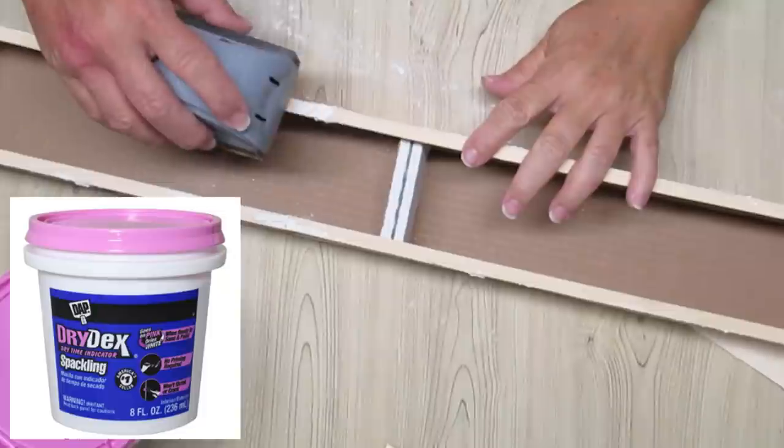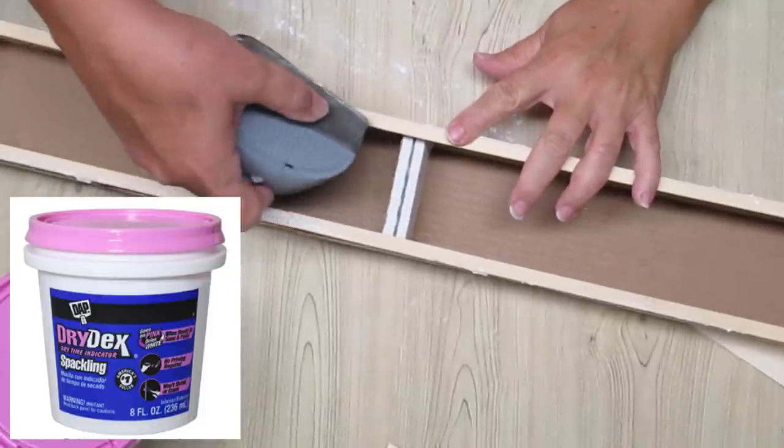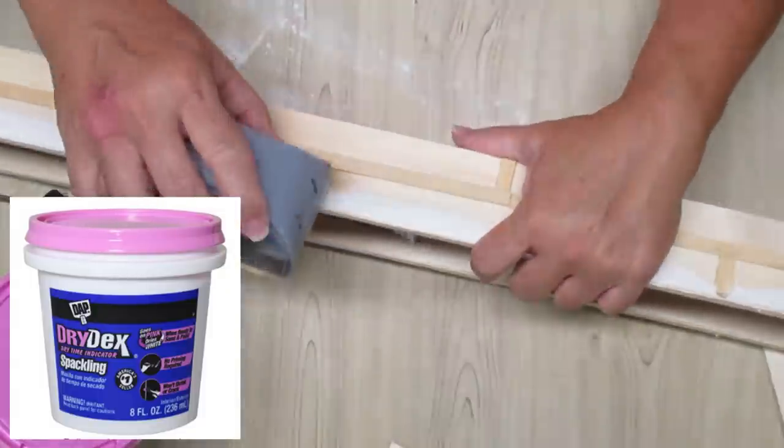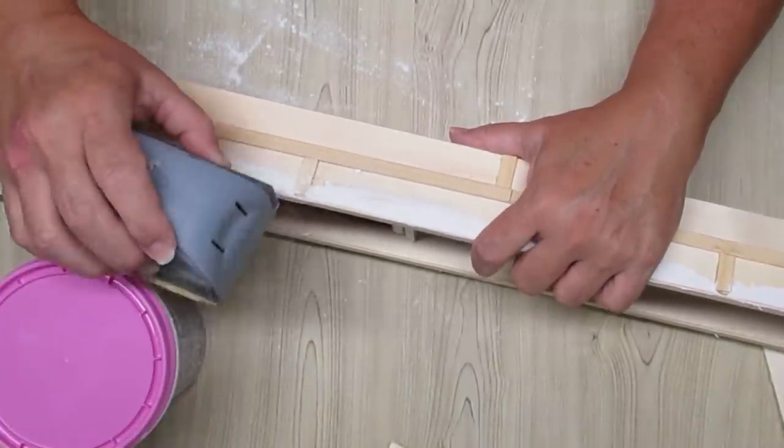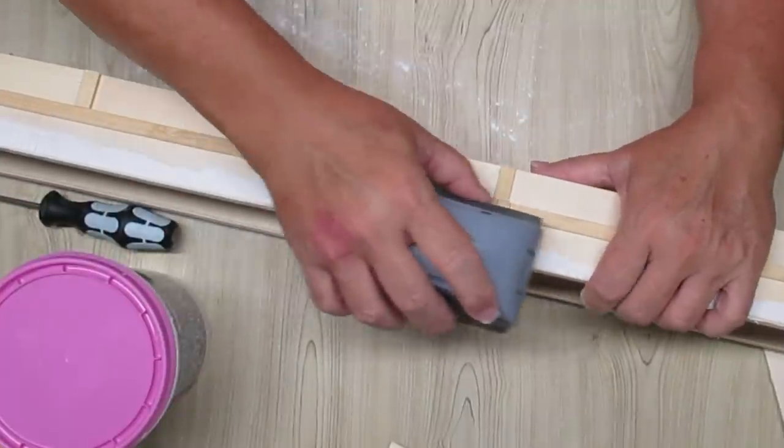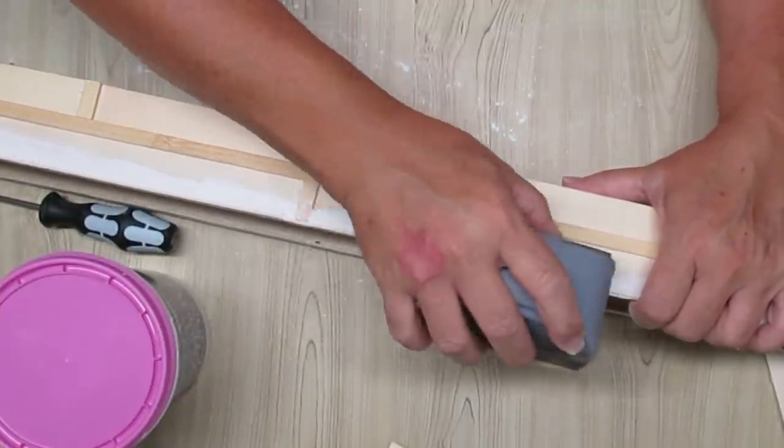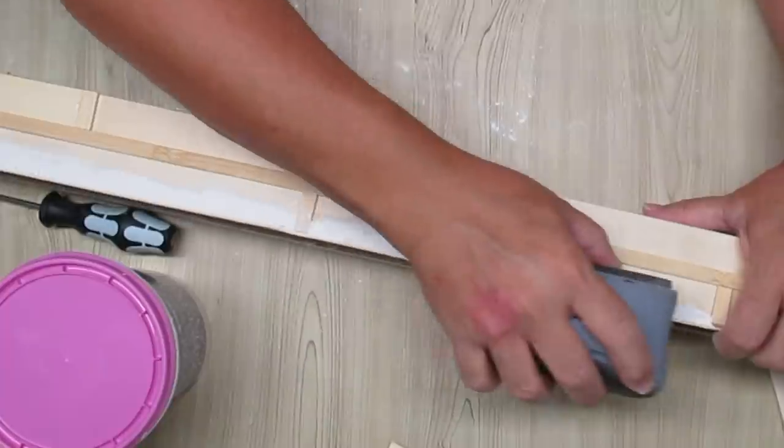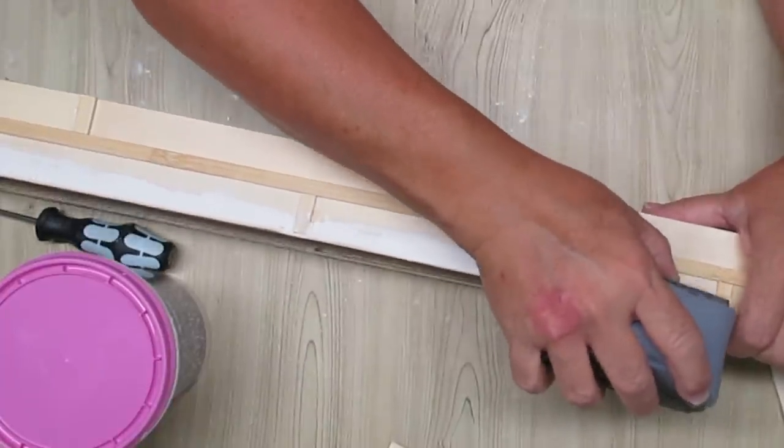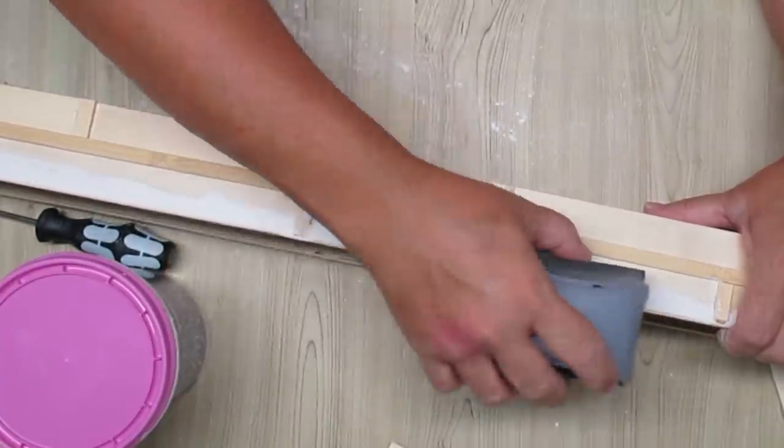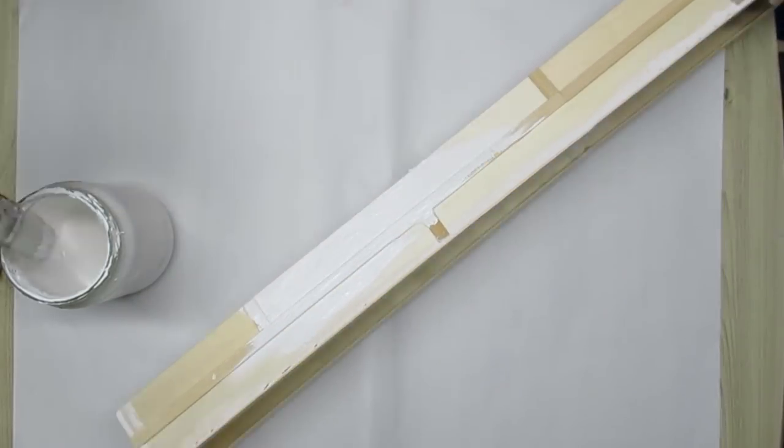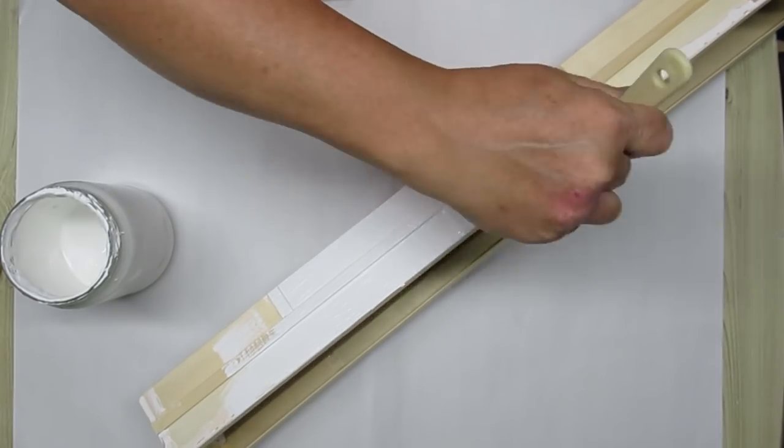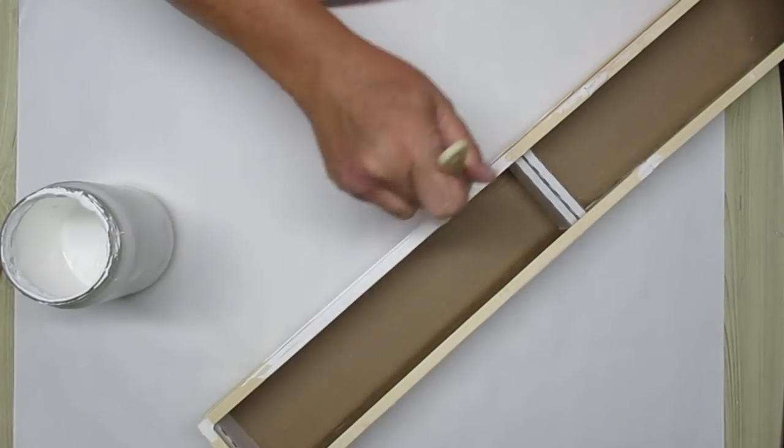I love using this DAP Drydex spackling. It's the one that is pink and then turns white when it's dry. It dries really easily and it doesn't flake or chip. When you sand it it's a really heavy dust so it doesn't fly anywhere. It just kind of falls down and that just makes it so much easier to work with.